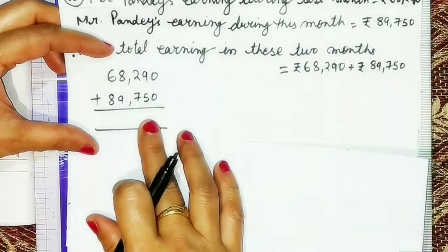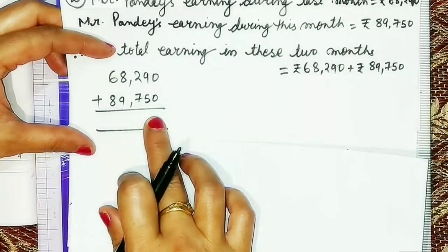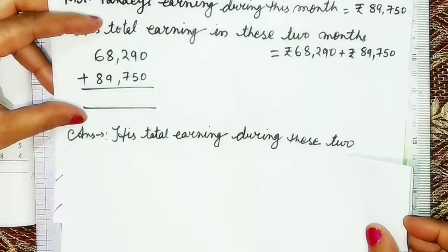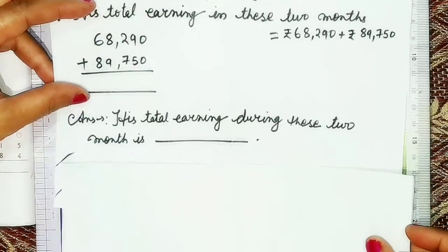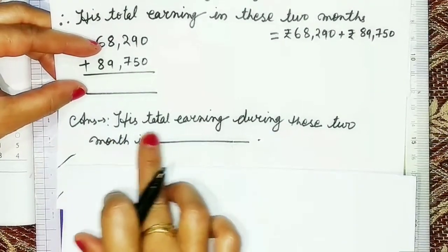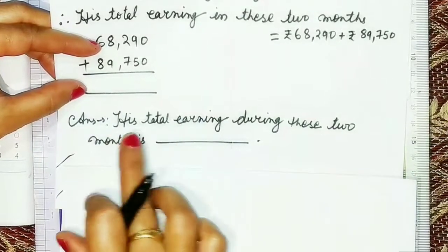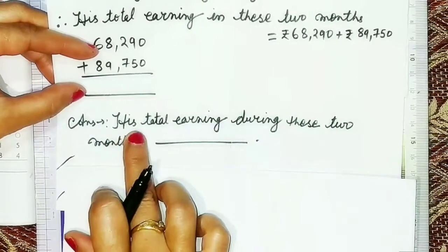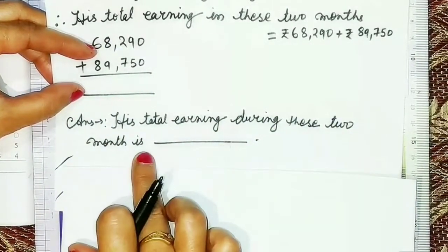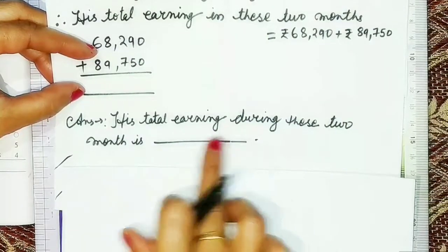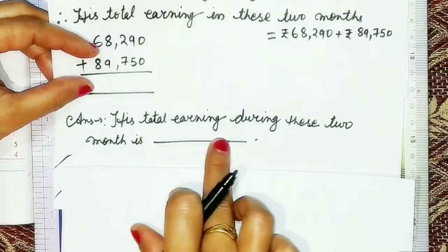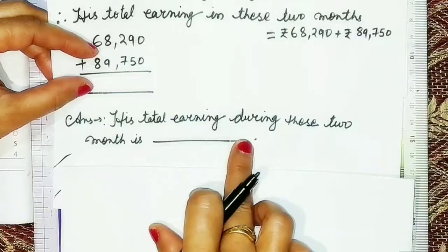Students, you have to fill this blank space after adding both terms. Finally, you have to write the answer as his total earning during these two months — whatever answer comes, you have to fill it in the blank space.